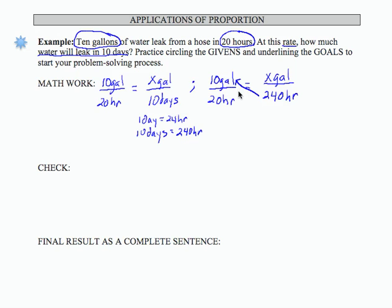So I can do a cross product here. And that's going to give me a result of 10 times 240 over 20, and that's going to equal x. I'm going to get 2,400 in the top divided by 20, and that equals 120 in the bottom. And we know from our units that that's going to be 120 gallons in 240 hours or 10 days.